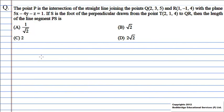The point P is the intersection of the straight line joining the points Q and R with the plane 5x - 4y - z = 1. If S is the foot of the perpendicular drawn from the point T to QR, then what is the length of the line segment PS?